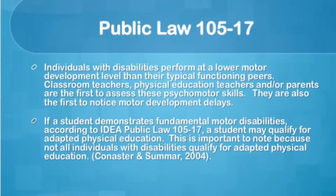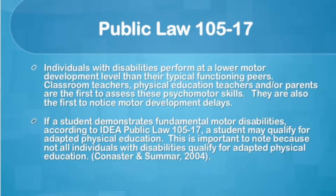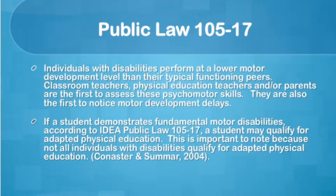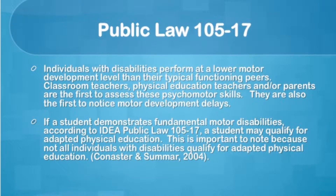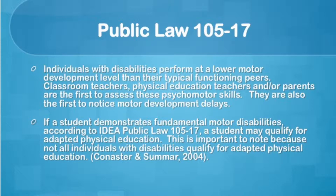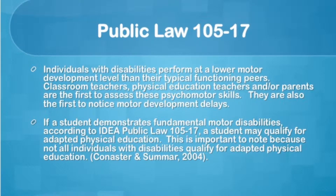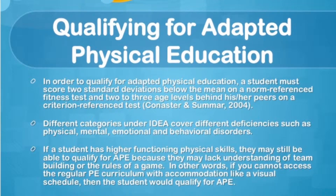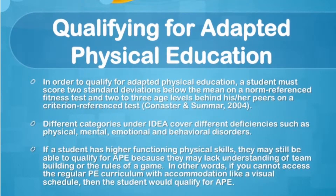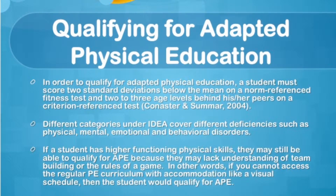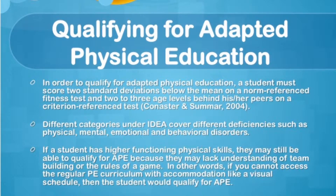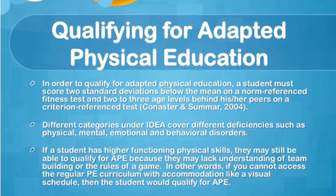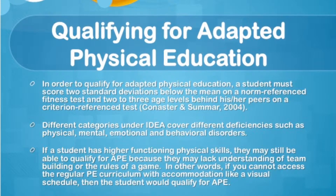Public Law 105-17 states that individuals with disabilities perform at a lower motor development level than their typical functioning peers, so that a student may qualify for adaptive physical education even if they have higher functioning psychomotor skills. It's important to note that not all individuals with disabilities will qualify for adaptive physical education. We want to make sure that students who score two standard deviations below the norm reference get adapted PE, and this can be different depending on what they're qualified for.